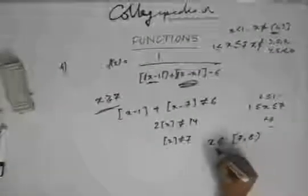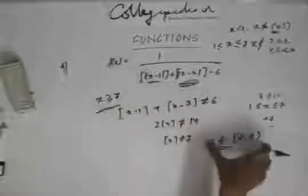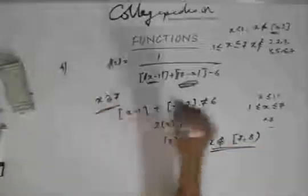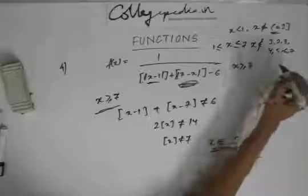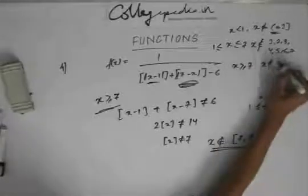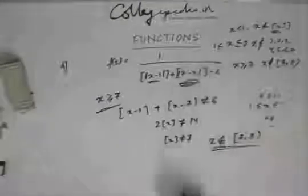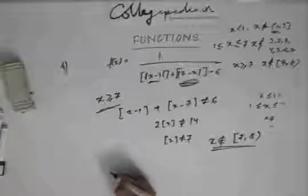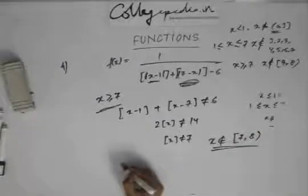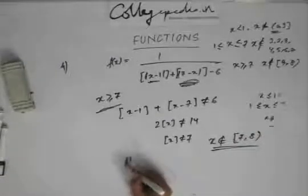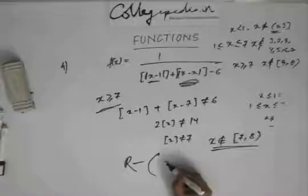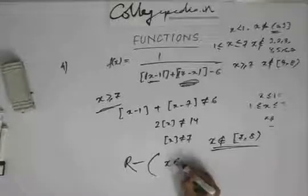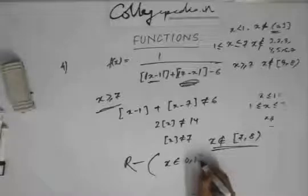This should not be the interval — I need to exclude this interval. So if x is greater than or equal to 7, x should not belong to that range. The domain of this function is the set of all real numbers minus x belonging to 0 to 1.